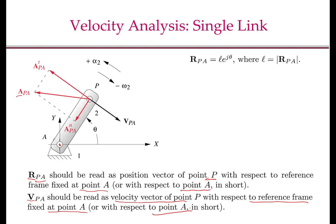Now, using the complex number representation of vectors, we know that R_PA equals L times e to the power of j·θ, where L is the length of the link. θ is the angle that the link makes with the positive x-axis, measured anticlockwise. As the link rotates, θ changes, so θ is actually a function of time. The velocity at point P is the time derivative of the position vector of point P. So V_PA is d/dt of R_PA, which equals d/dt of L·e^(jθ). Now, L is a constant — it is the link length — and j is the square root of minus 1, also a constant. So I can write this as L times d/dt of e^(jθ).